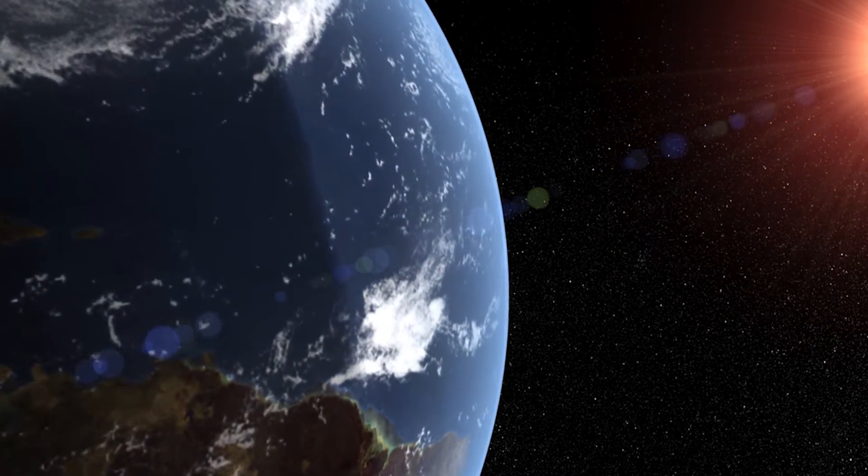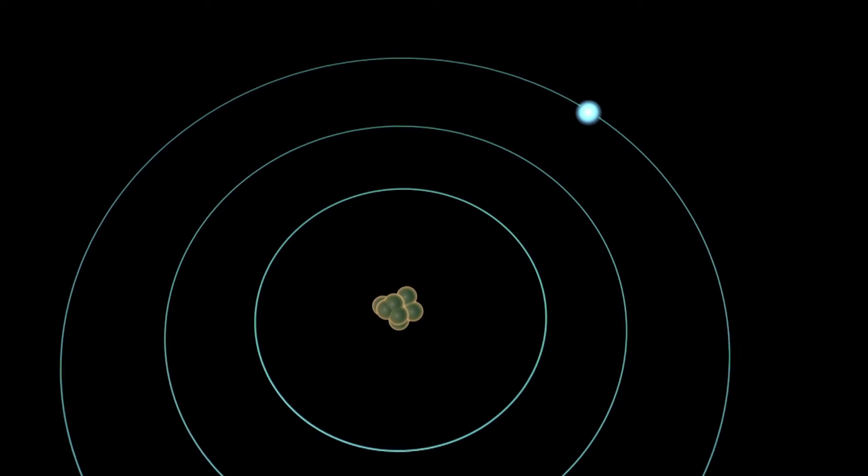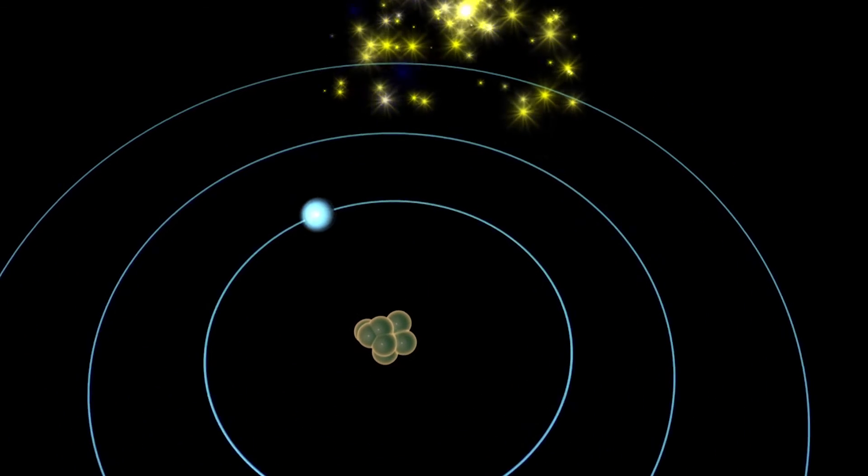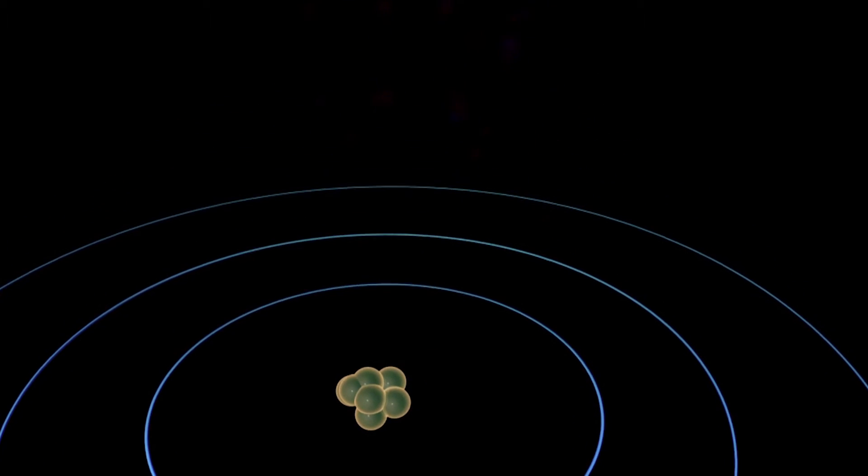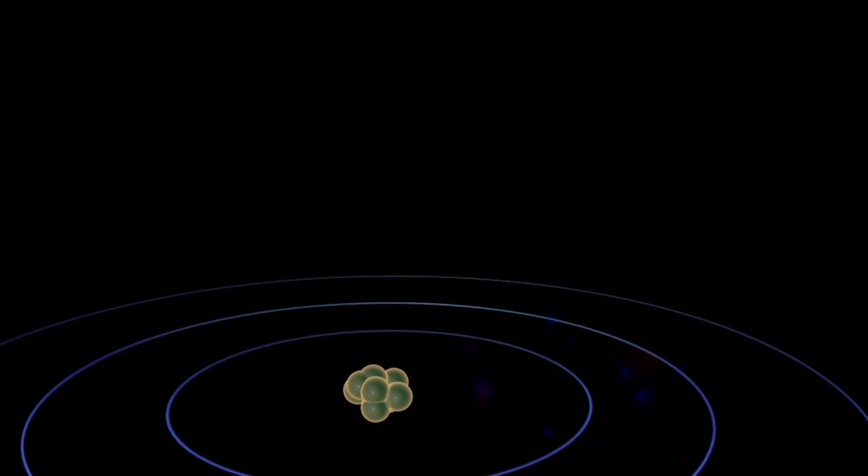But when an electron jumps from one atomic orbit to another, said Niels Bohr, the jump is discontinuous. The electron never goes through the intervening space. It disappears from one orbit and reappears in the other.